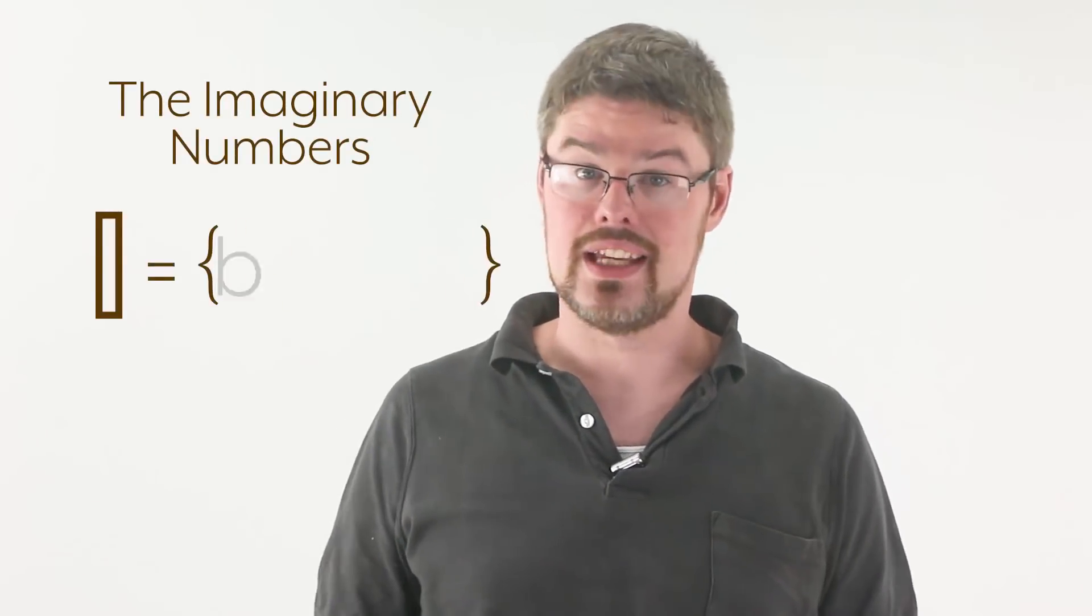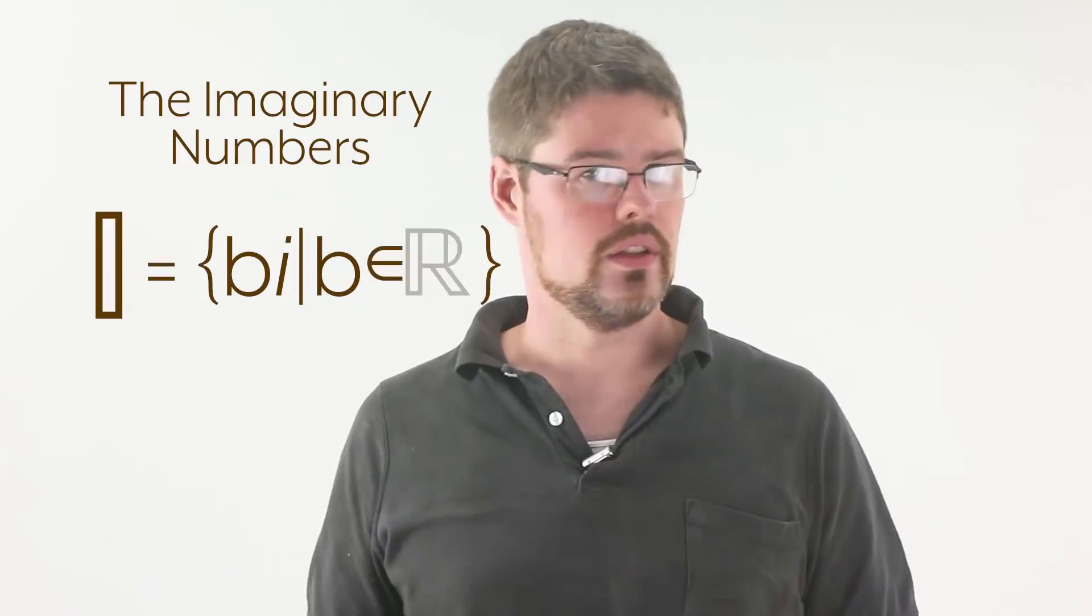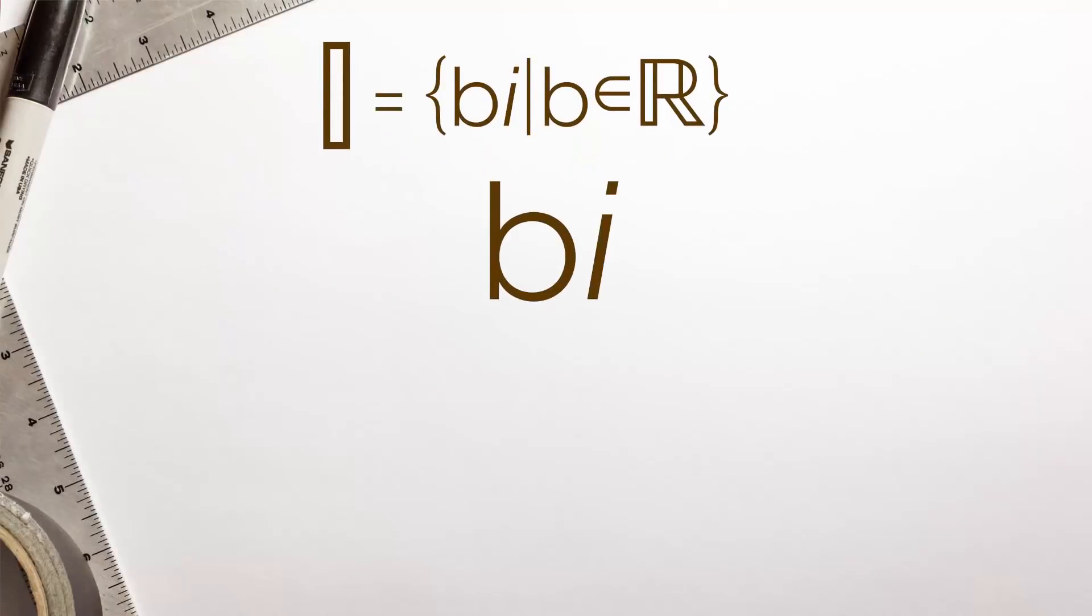By contrast, here are the purely imaginary numbers. They look like this, where b can be any real number. These two things multiplied together create an imaginary number. One easy way to look at it is that the imaginary numbers include every real number multiple of i in this set.